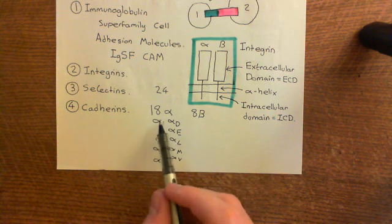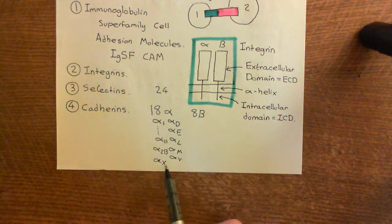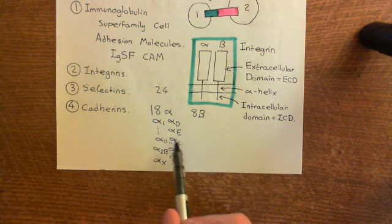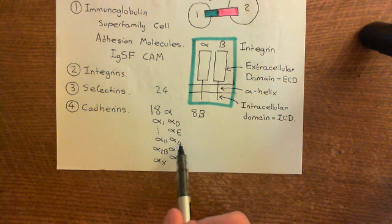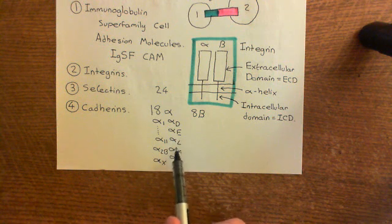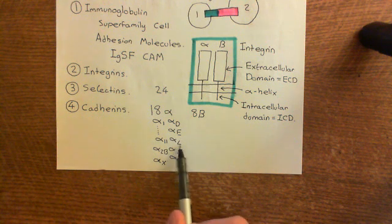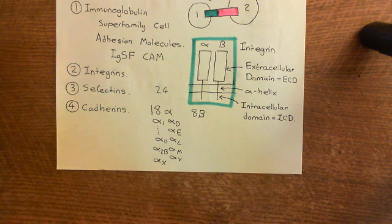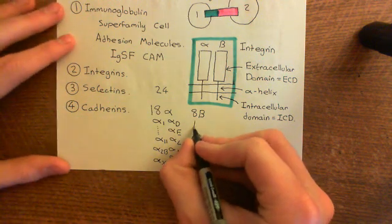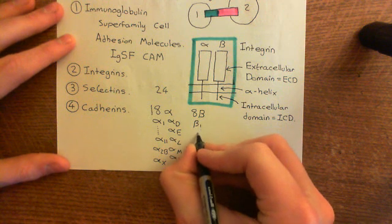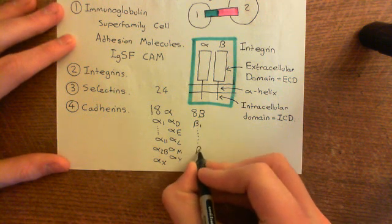It would have been better to name them alpha 1 through alpha 18, but they were named for which integrins they're found in — for example, alpha L is found within the LFA-1 integrin. The 8 beta subunits are named far more sensibly: just beta 1 through beta 8.